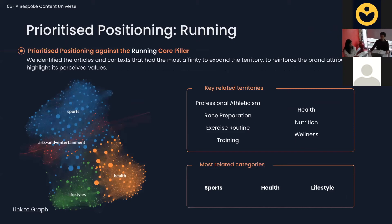Starting with the first axis — capitalizing on running — we craft the seed territory together with the client by analyzing web pages, product pages, and value pages. During the expansion, new territories appear: territories around professional athleticism and race preparation to confront the highest challenges in athletics — where you need the most advanced solution. Then we move towards territories such as exercise routines, training, health and nutrition, and wellness — everything related to these core pillars.